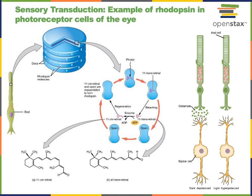Light is detected by a G-protein coupled receptor protein in the photoreceptor cells known as rhodopsin. The rhodopsin protein contains a small molecule cofactor known as retinal, a form of vitamin A. Light causes a shape change to the retinal molecule, altering its structure from the bent cis isomer to the linear all-trans retinal isomer. This isomerization will activate the rhodopsin receptor protein, stimulating an intracellular signaling mechanism that causes hyperpolarization and a decrease in the release of neurotransmitters.